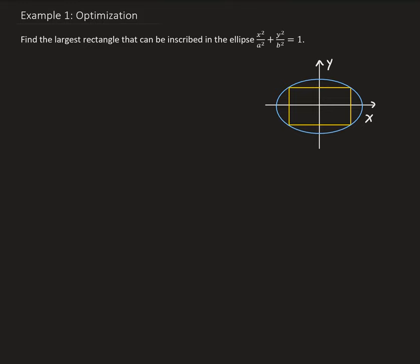In this example, we want to find the largest rectangle that can be inscribed in the ellipse, and the equation is given there. So in this figure, we have our ellipse centered at the origin, and you can see that the rectangle is inscribed within this ellipse. We're going to assume that the major axis is horizontal, which implies that A is strictly bigger than B. We could also set up the problem where the major axis is vertical — either way, the answer turns out to be the same.